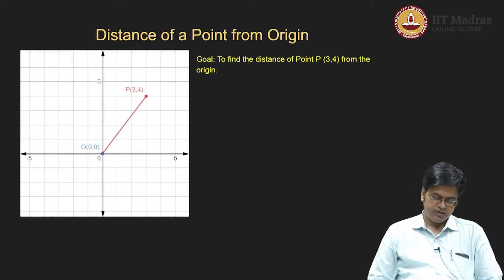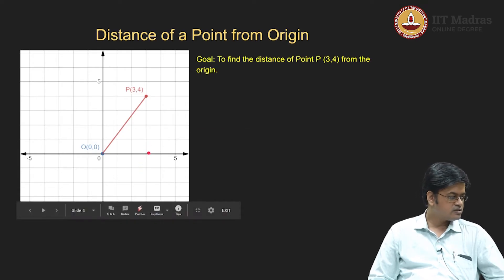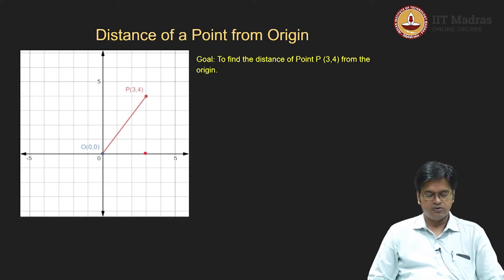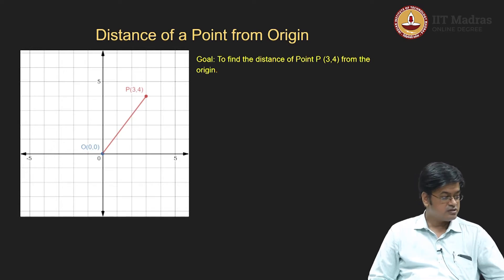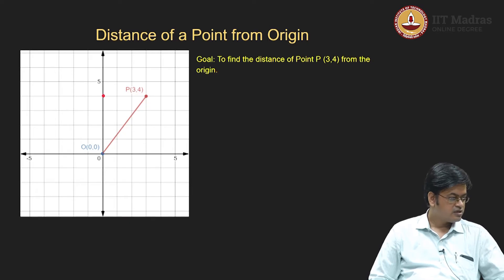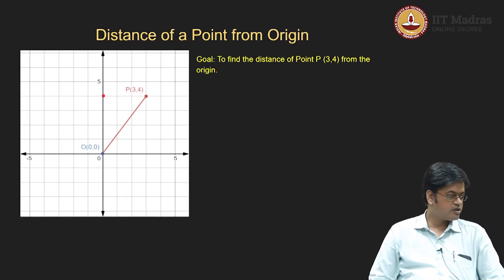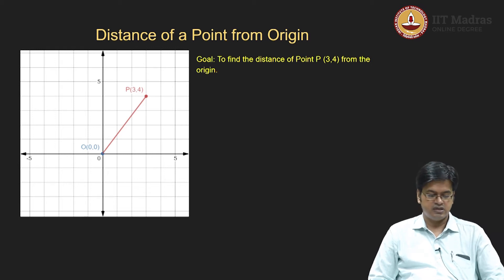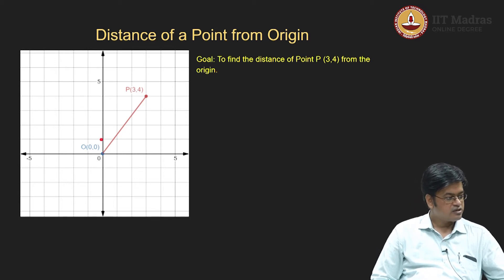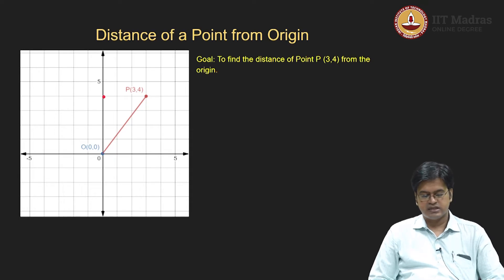Suppose this point is either lying on the x-axis or y-axis. If this point is say 3 comma 0, do I know how to find the distance of this point? The answer is yes — I just need to calculate the units in the horizontal direction. Suppose the point is on the y-axis, then do I know how to calculate the distance? The answer is again yes — I just need to calculate the number of units I need to travel to reach this point. So if the point lies on the x-axis or y-axis, I know how to calculate the distance.